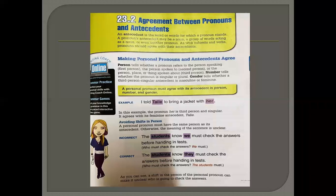For the third person, we have variations in using pronouns. We need to know the shifts in person. You have to use the pronoun according to the antecedent you are referring to. Sometimes there is a shift in pronouns and it changes the entire meaning of the sentence. For example, we have two sentences: 'The students know we must check the answers before handing in tests,' and 'The students know they must check the answers before handing in tests.'